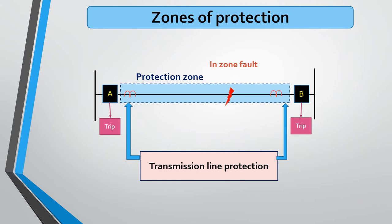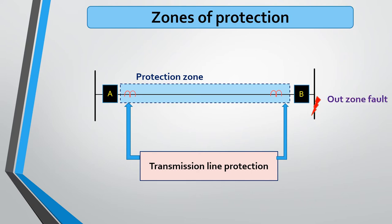This is the zone of protection for the transmission line. After clearing the fault, the circuit breaker will again get closed and work normally. In the second case, if a fault occurs on this particular bus bar, circuit breakers A and B are not going to give any protection. Fault current will flow through the entire system and may interrupt the complete power system — that is why zones of protection are important.